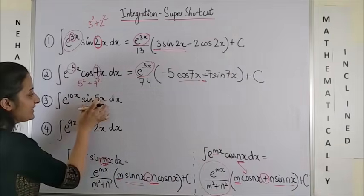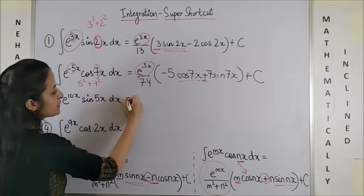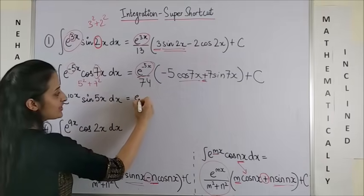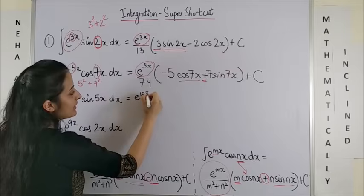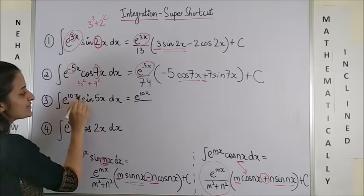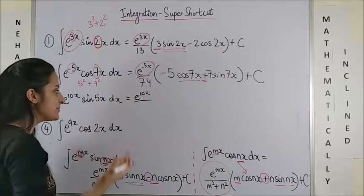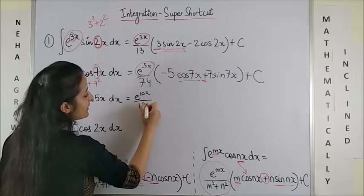So moving on again, there's a sin function. First of all, without seeing all that, just write e to the power 10x upon 10 square plus 5 square. That gives me 100 plus 5. So 125 here.